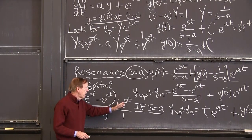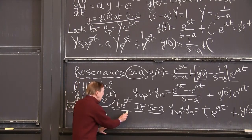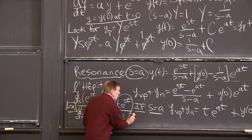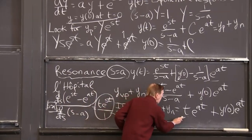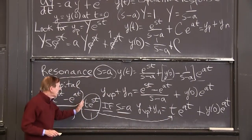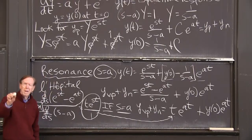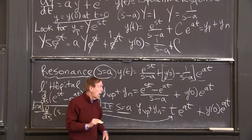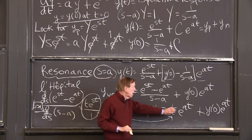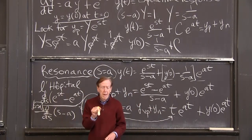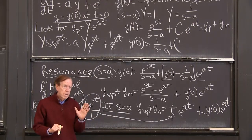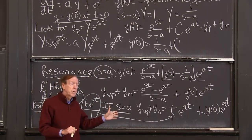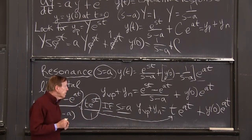And now I let s go to a. Well, it's easy to let s go to a now. Now this thing approaches that. I have the t·e^(at) in the limit. So L'Hopital's rule was the reason behind this formula for resonance. But again, I emphasize that, expect a factor t when you have this resonance.